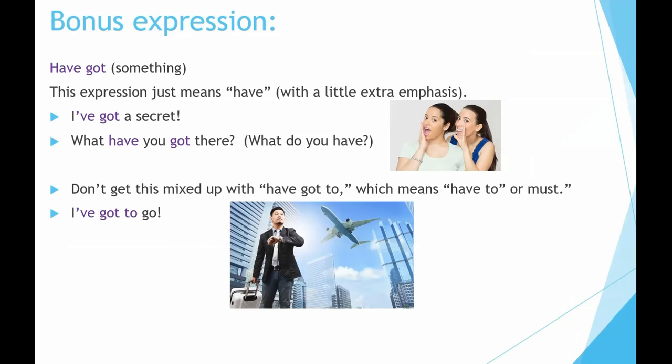Bonus expression: 'have got something.' This expression just means 'have,' with a little extra emphasis. For example: 'I've got a secret.' 'What have you got there?' — that means 'what do you have?' Don't get this mixed up with 'have got to,' which means 'have to' or 'must.' For example: 'I've got to go.'